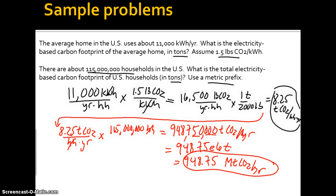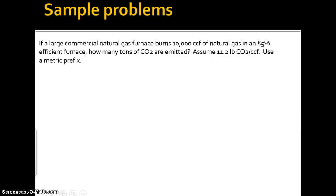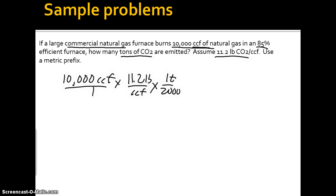So let's go on to the next problem. So now, we have a commercial natural gas furnace. We're burning 10,000 CCFs of natural gas. It's 85% efficient. How many tons of CO2 are emitted? Assume 11.2 pounds of CO2 per CCF. This is a little bit of a trick question because all we really care about is how many CCFs of natural gas we burn. So if we're burning 10,000 CCFs, and we know that there are 11.2 pounds per CCF, I'm going to go right to tons. So one ton is going to be 2,000 pounds.